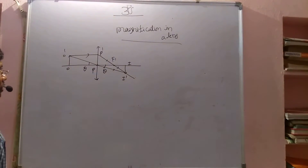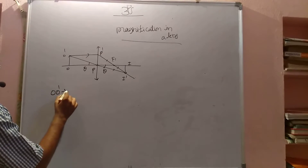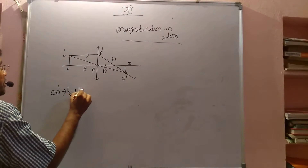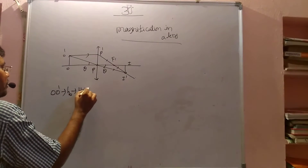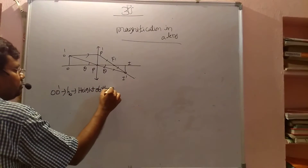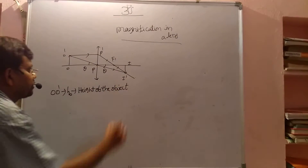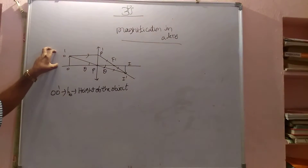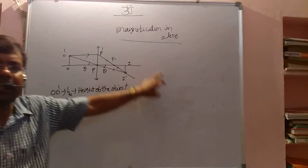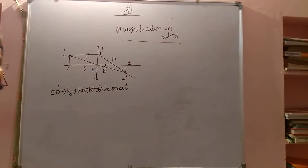Now, O' is the height of the object and I' is the height of the image.